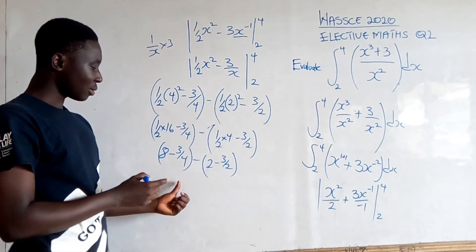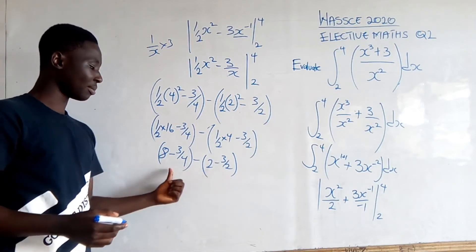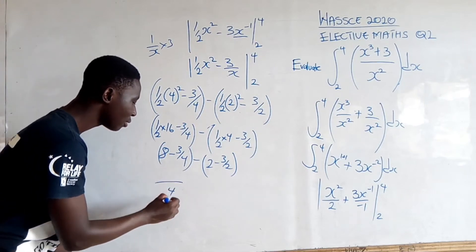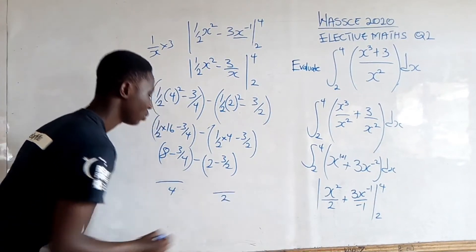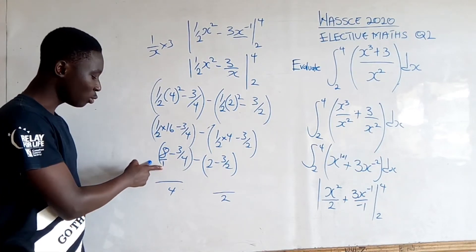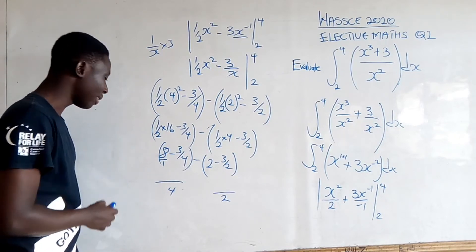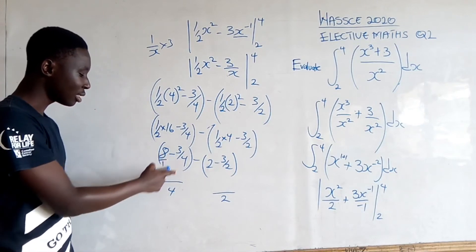Now, we have to find the LCM of each term. The LCM of this is 4. So, 1 goes into 4 four times, 4 times 8 gives us 32, minus 3. This over 4.